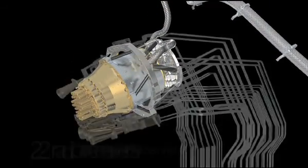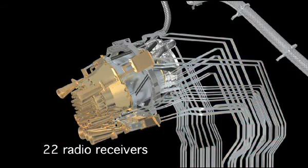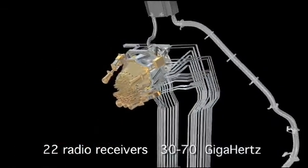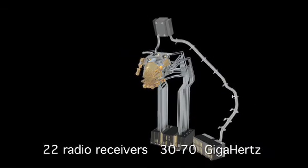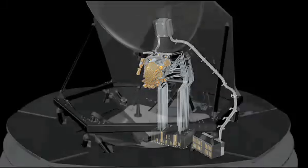The low-frequency instrument consists of 22 radio receivers that are tuned to three frequency channels between 30 and 70 GHz. They work like transistor radios, amplifying the signal collected by the telescope and converting it to a voltage.